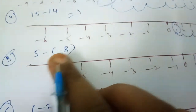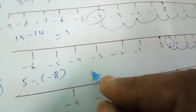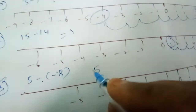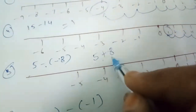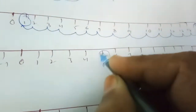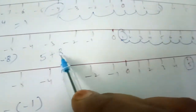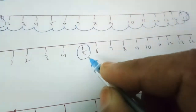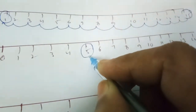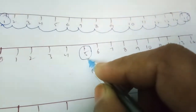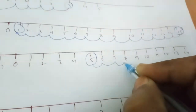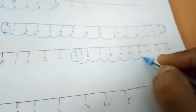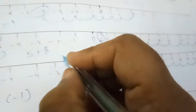Next: 5 minus minus 8. Here also, minus into minus is plus, so it becomes 5 plus 8. Where is the 5 first? Here. Now we have to add 8 and move to the right side. How many times? 8 times: 1, 2, 3, 4, 5, 6, 7, 8. So 13 is our answer.